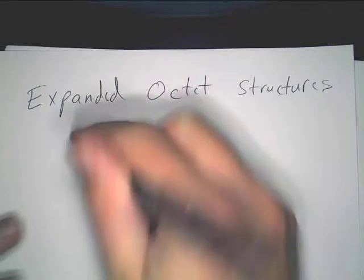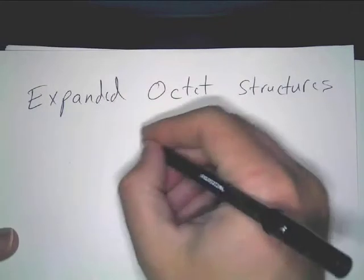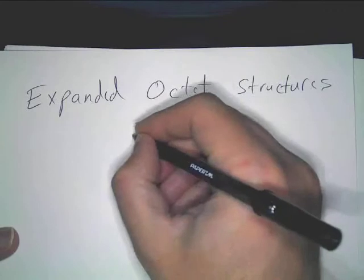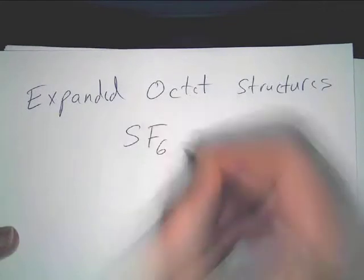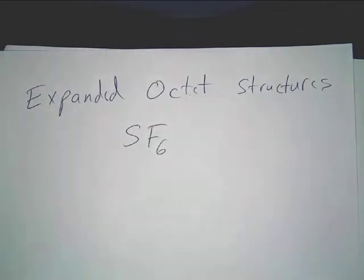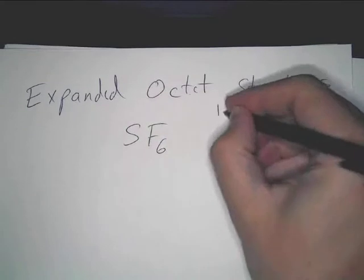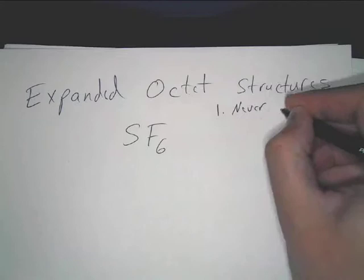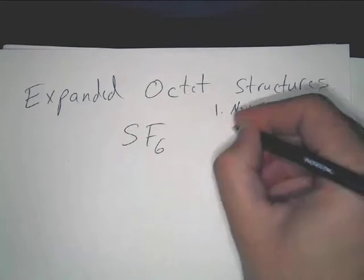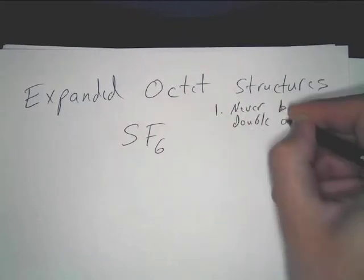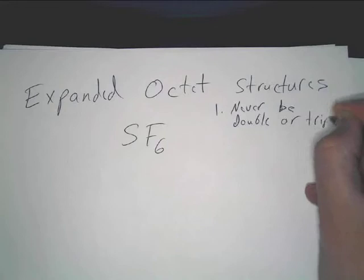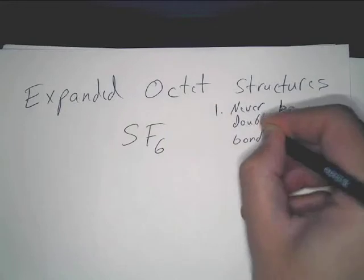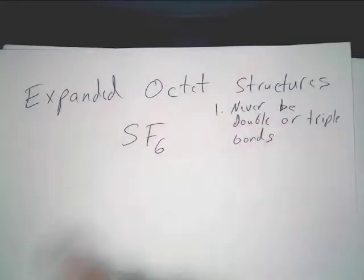Let's quickly go through this. What you want to do, let's take this example here. Let's do sulfur hexafluoride. Now, the first thing, I want to tell you a couple things when we're drawing these. One, as far as we're concerned, there will never be double or triple bonds for expanded octet stuff.